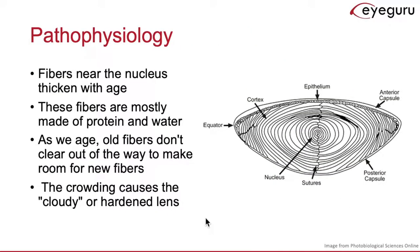Cataracts form over time as fibers, which are made of protein and water near the nucleus, thicken with age. Over time, these old fibers are not able to clear out of the way to make room for new fibers, and it is this crowding that leads to a cloudy, hardened, and enlarged lens.